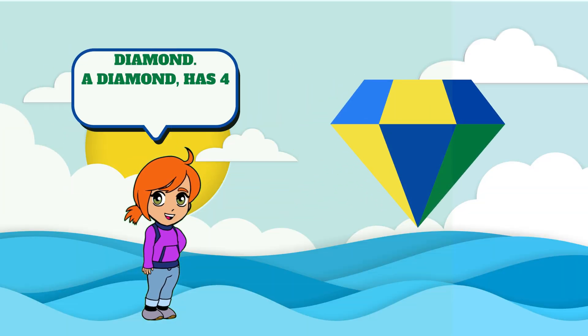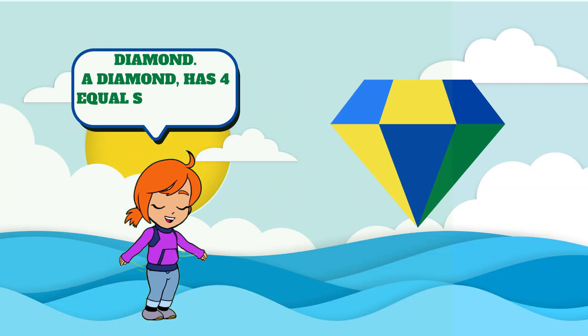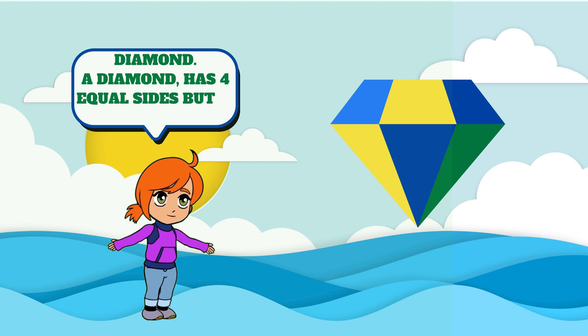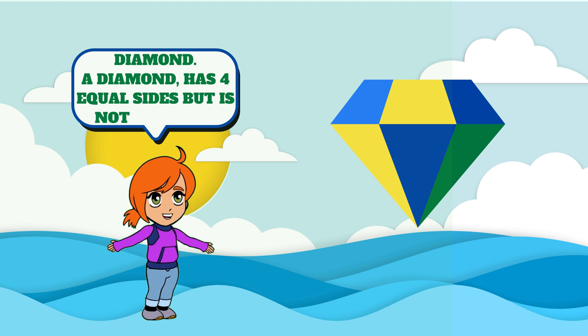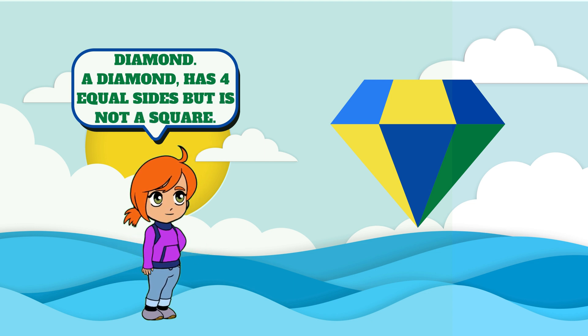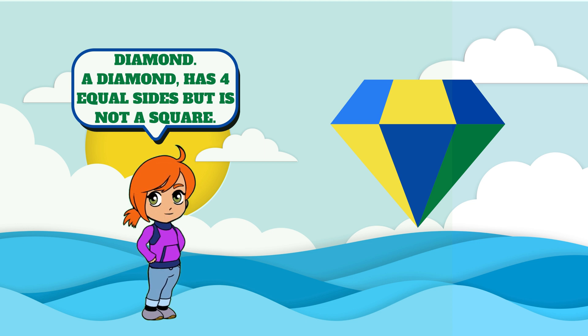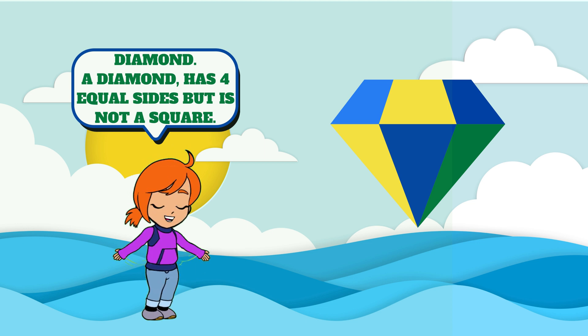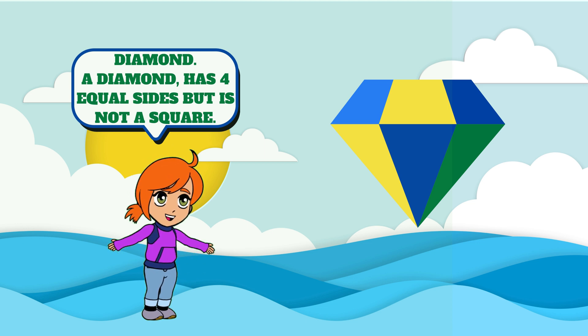Diamond. D-I-A-M-O-N-D. Diamond. A diamond has four equal sides but is not a square.